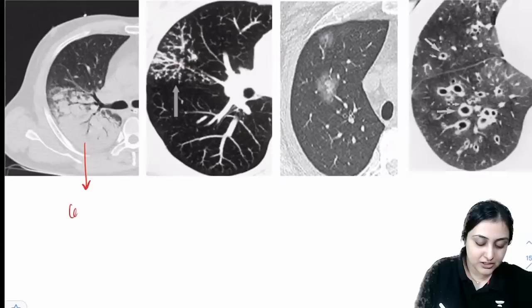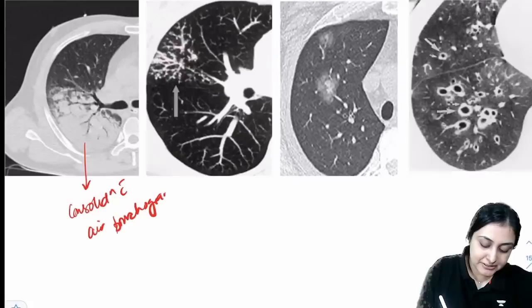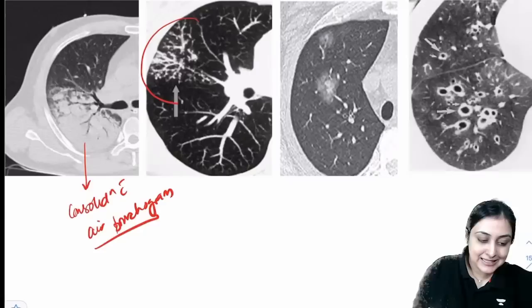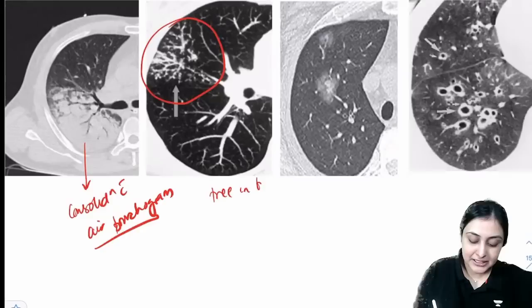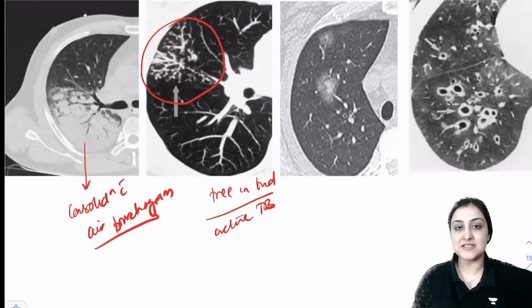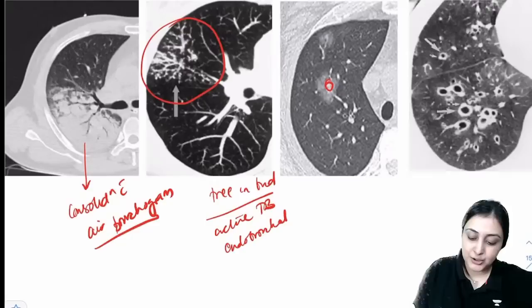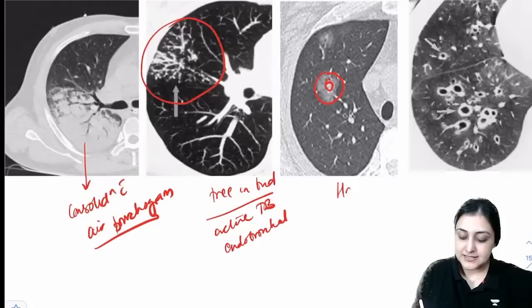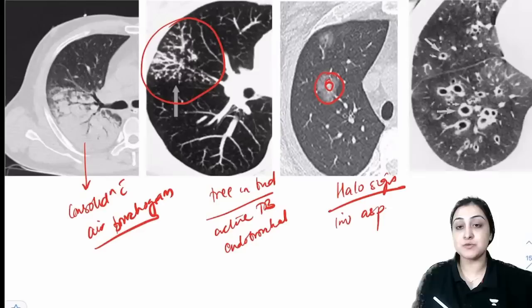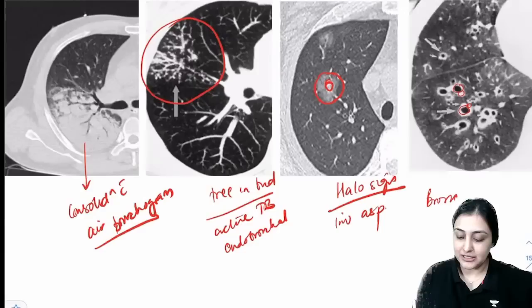Four HRCT lung patterns: consolidation with air bronchogram = pneumonia or pulmonary edema. Tree-in-bud pattern = active tuberculosis (endobronchial spread). Halo sign (solid center with ground-glass outside) in an immunocompromised patient = invasive aspergillosis. Signet ring sign (dilated black bronchus larger than adjacent artery) = bronchiectasis. Investigation of choice for bronchiectasis: HRCT.